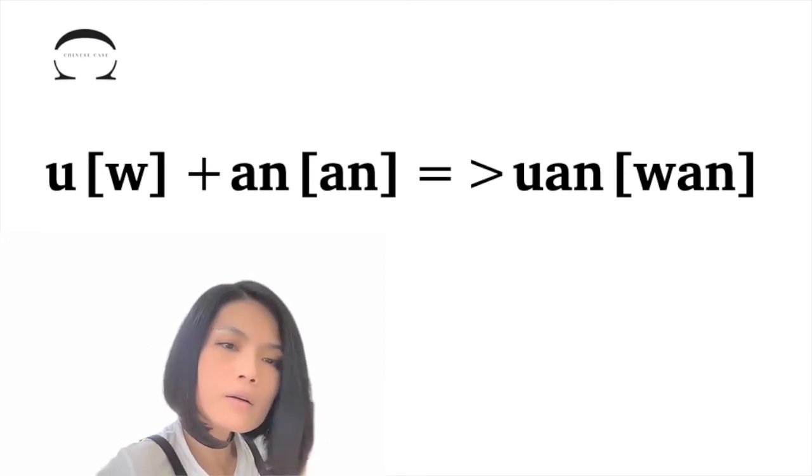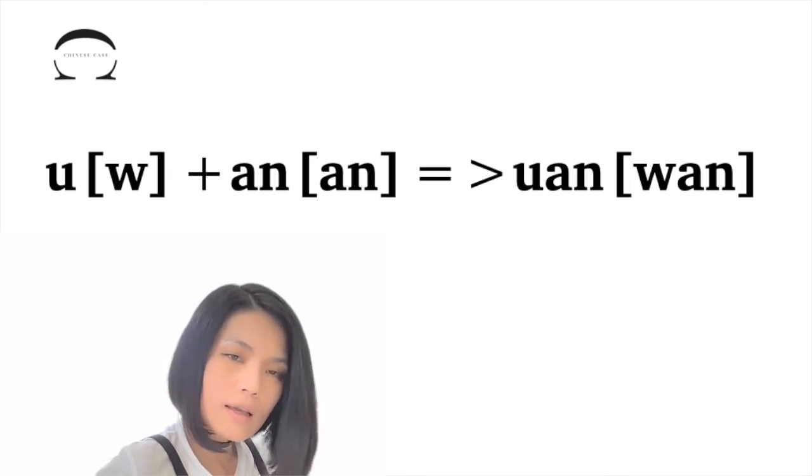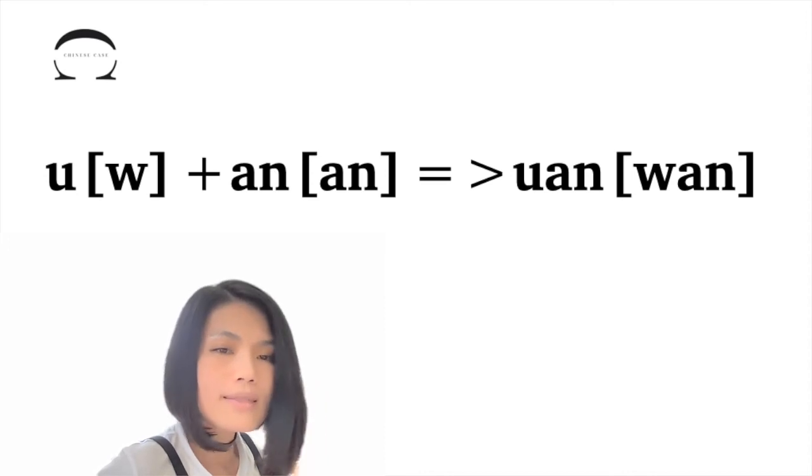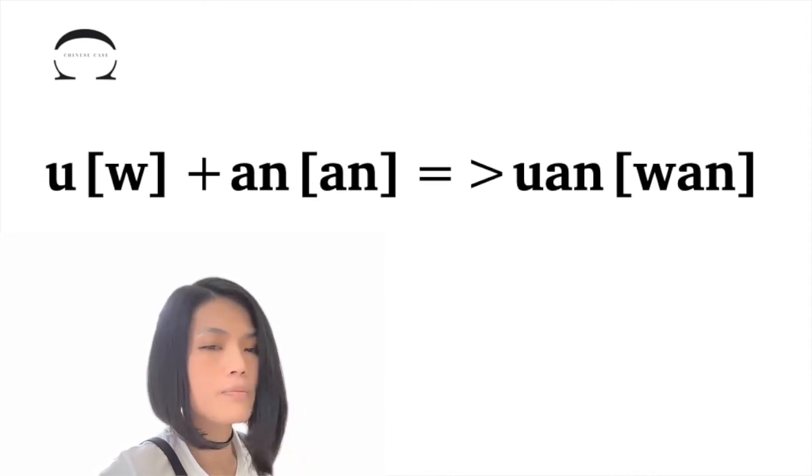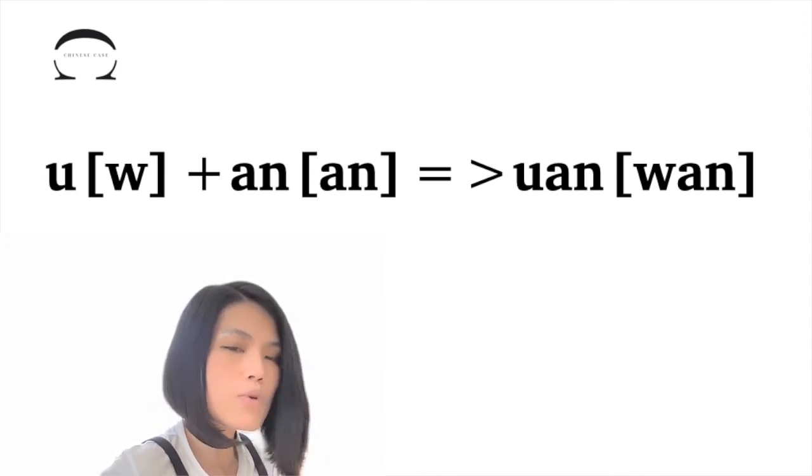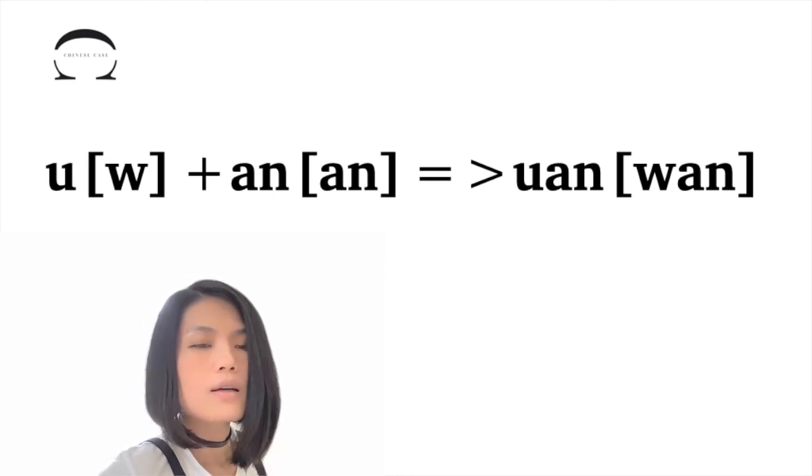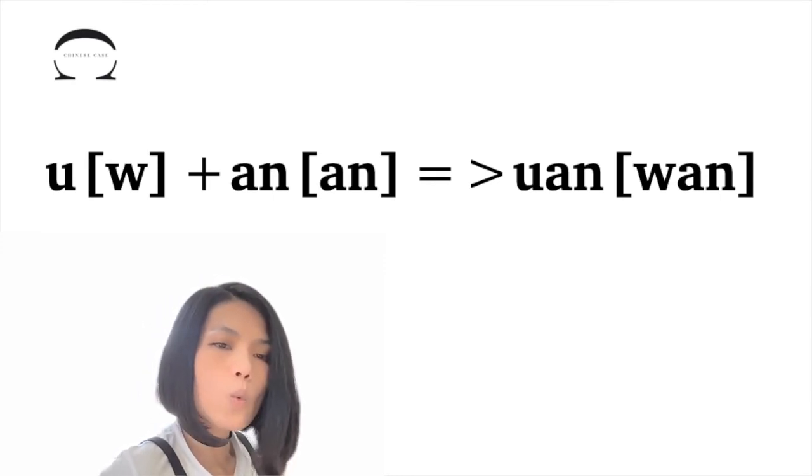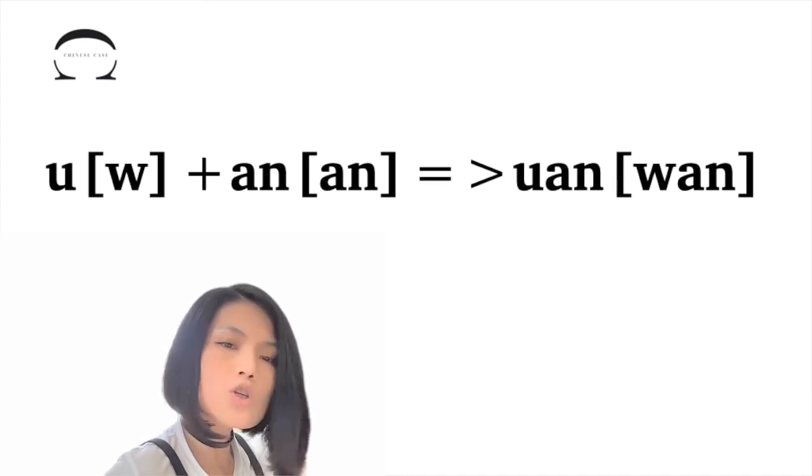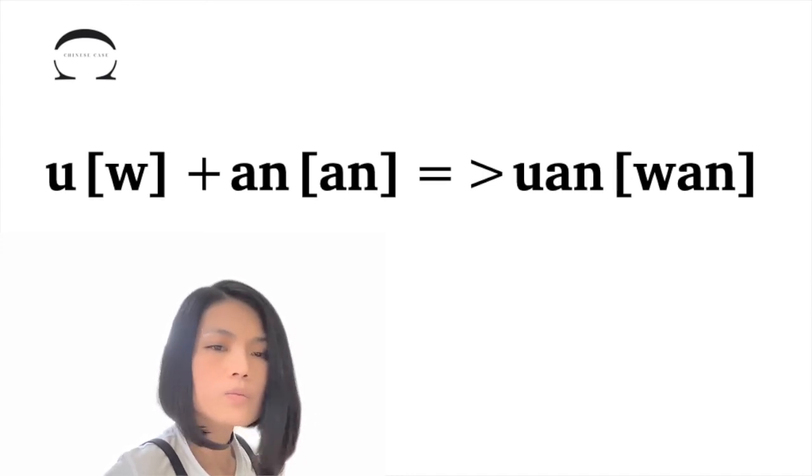A remark here: The semi-vowel W serves as the onset and it should glide into the A seamlessly. We should not hear a gap between these two sounds. If it sounds like W-AN, W-AN, it's not right. It should be WAN, WAN. It's very smooth.